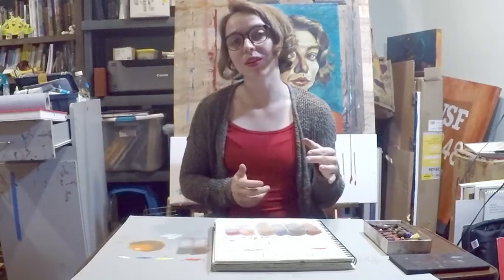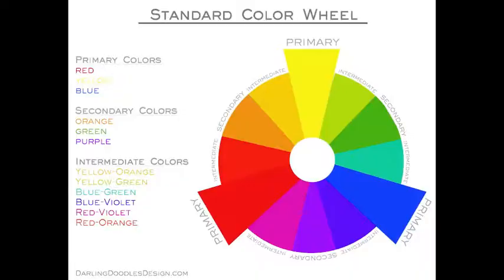Before we get into that, let's do a quick review on the color wheel and color theory. Here we have a clearly labeled standard color wheel. The primary colors are colors that cannot be mixed from any other color — they include red, yellow, and blue. Secondary colors are combinations of two primaries, and these include orange, green, and purple.